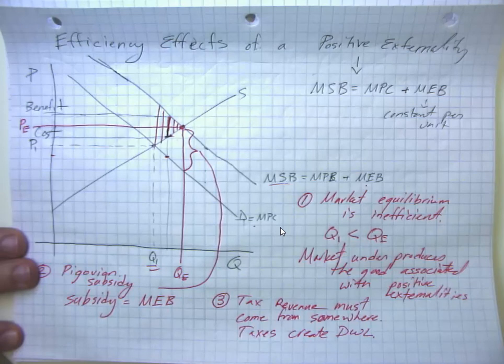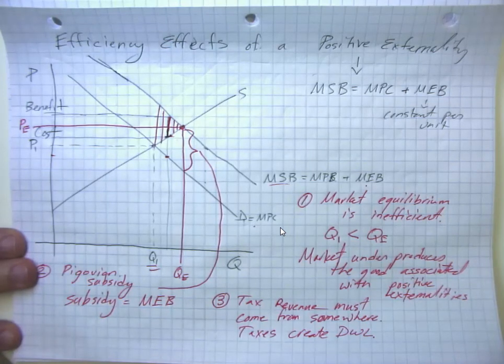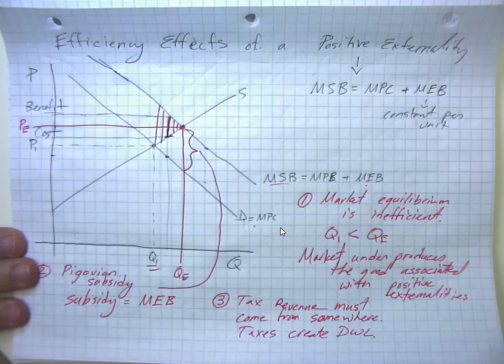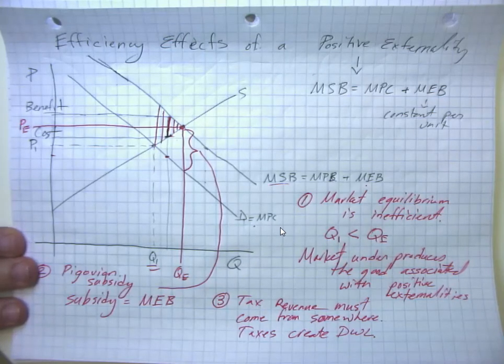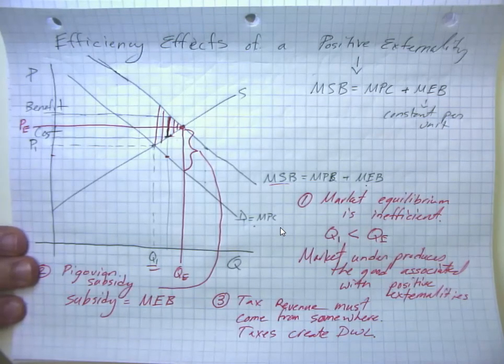Economists are, in general, a little bit wary of throwing out subsidies for alleged positive externalities, because you can see how people are going to be very fond of making an argument that their particular industry generates a lot of positive externality and could they have their money now, please. So you want to be a little bit careful.